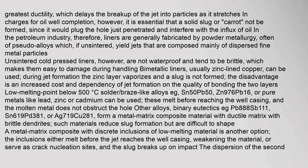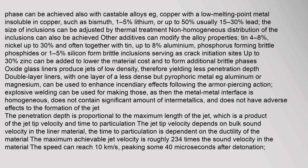Low melting point phases can also be achieved with castable alloys, e.g., copper with a low melting point metal insoluble in copper, such as bismuth (1 to 5%), lithium, or up to 50% (usually 15 to 30%) lead. The size of inclusions can be adjusted by thermal treatment. Other additives can modify alloy properties: tin (4 to 8%), nickel up to 30% often together with tin, up to 8% aluminium, phosphorus forming brittle phosphides, or 1 to 5% silicon forming brittle inclusions serving as crack initiation sites. Up to 30% zinc can be added to lower material cost.